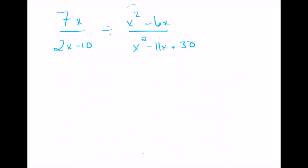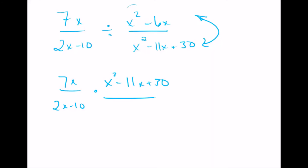Sorry this video is going kind of long — I'm going to cut myself off here. There's just one more thing we have to talk about, and that's dividing expressions like this. All you need to know is that it's exactly the same as multiplying, but when you see division, you need to flip the second fraction around, and then it's exactly the same as multiplying. So 7x over 2x minus 10 divided by x squared minus 6x over x squared minus 11x plus 30 — you flip it and then factor where you can.